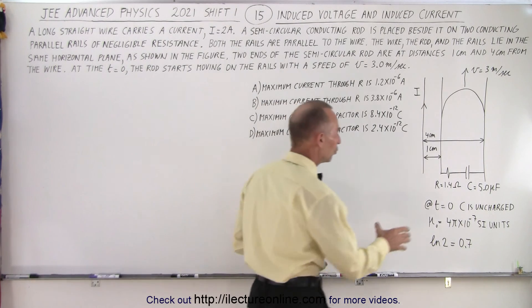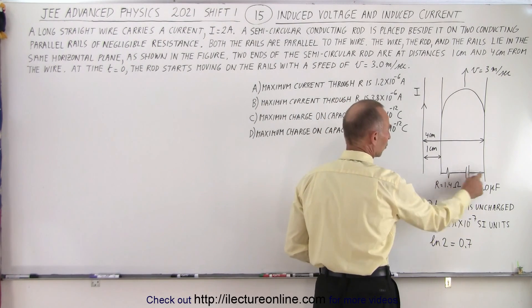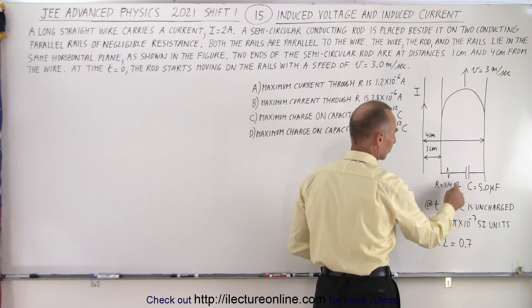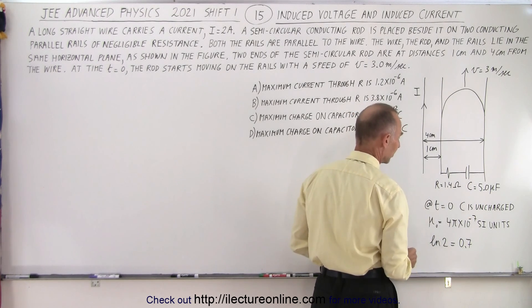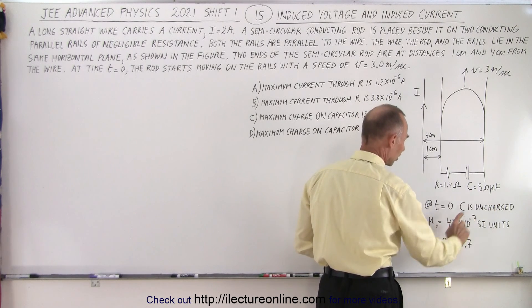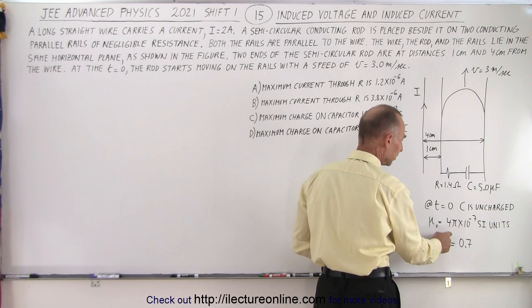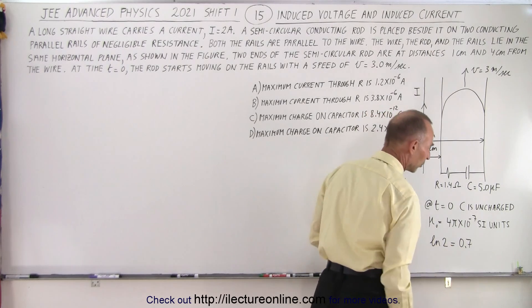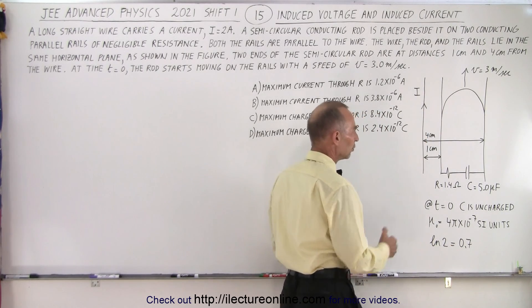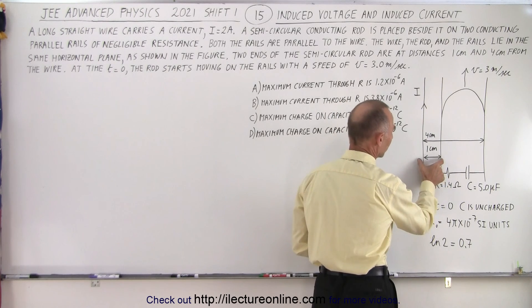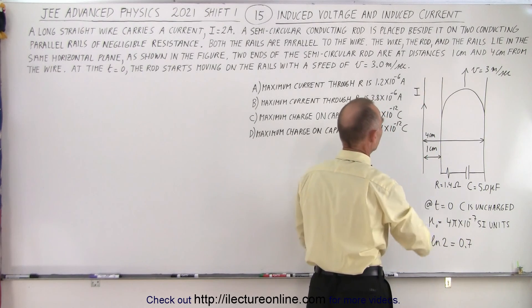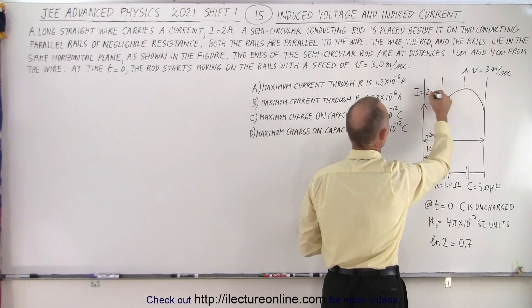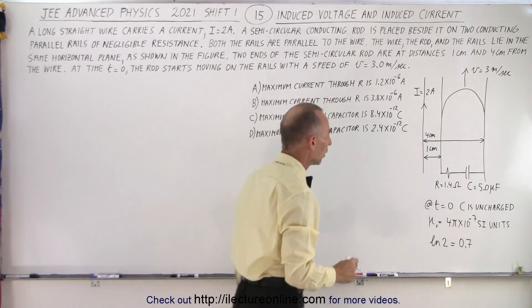Notice that the two rails are connected with a circuit that has a resistor and a capacitor, a 1.4 ohm resistor, a 5 microfarad capacitor. And at time equals 0, the capacitor is not charged. Mu sub knot was given and they say the natural log of 2 approximated to about 0.7. Notice the left rail is 1 cm and the right rail is 4 cm away from the wire that carries the 2 amp current. So I equals 2 amps.